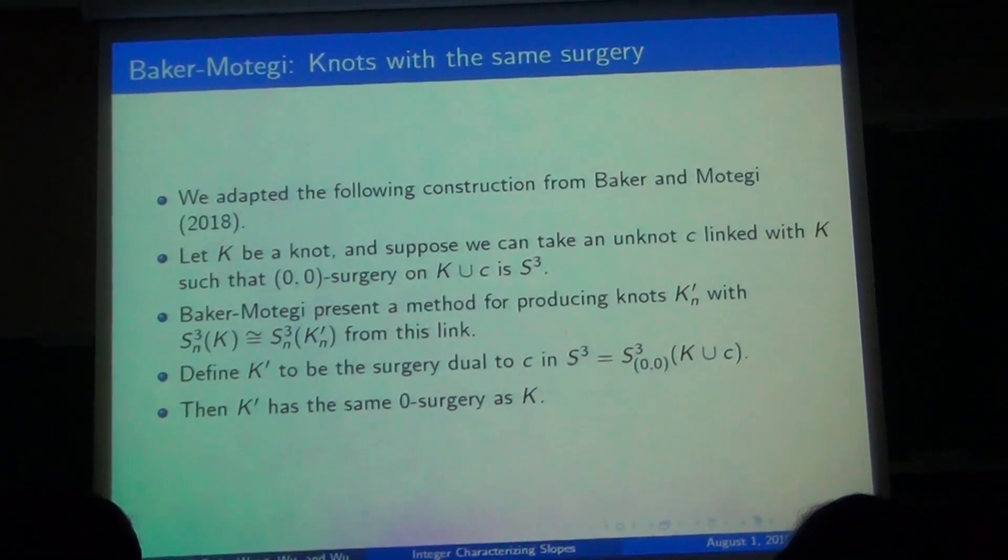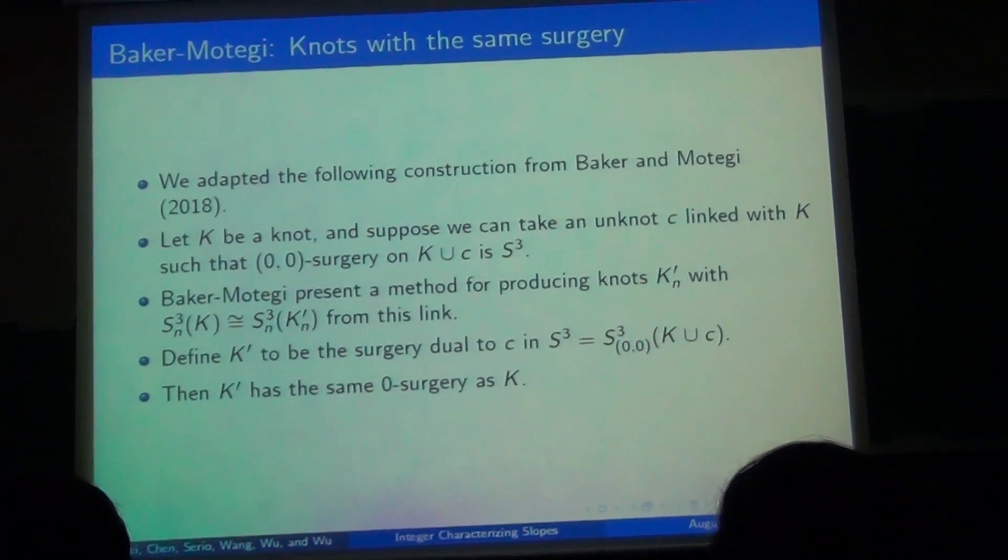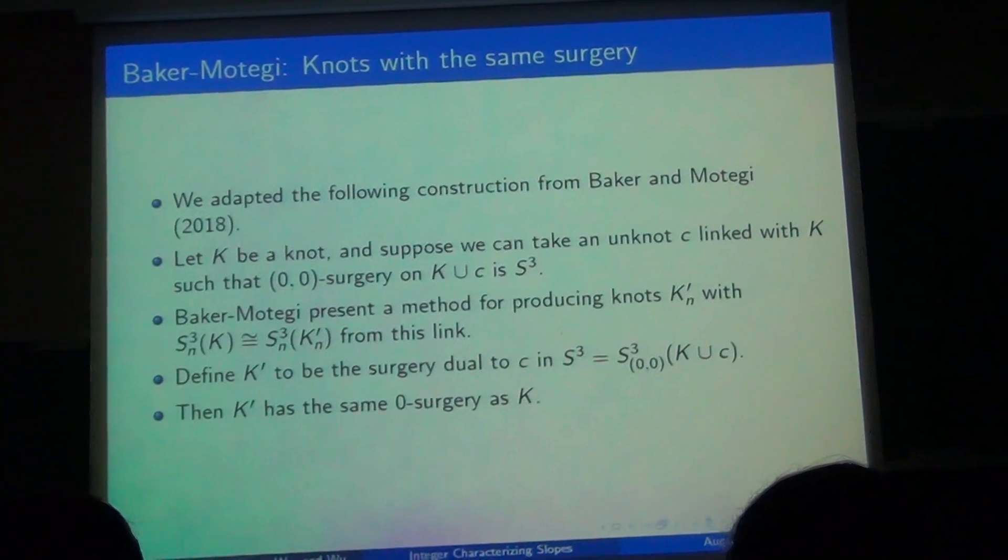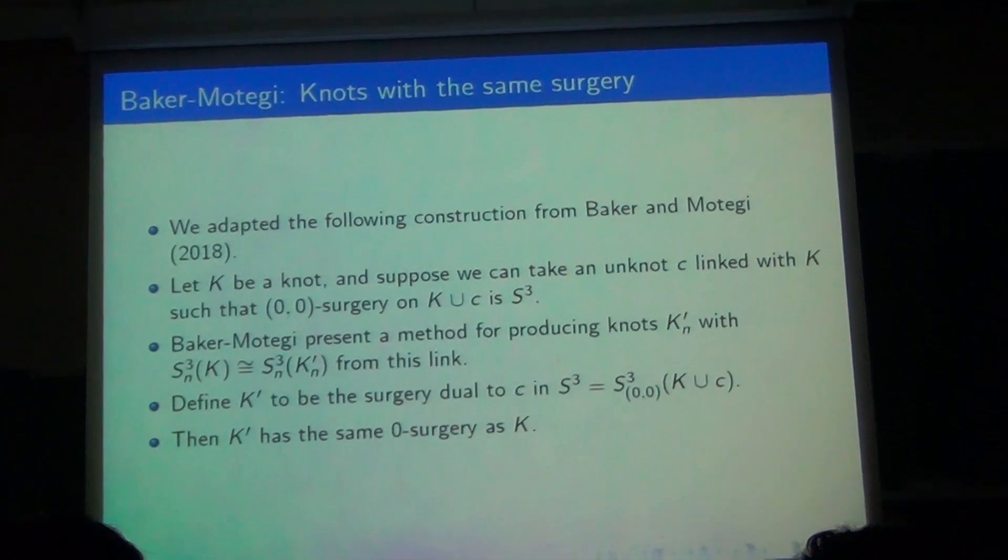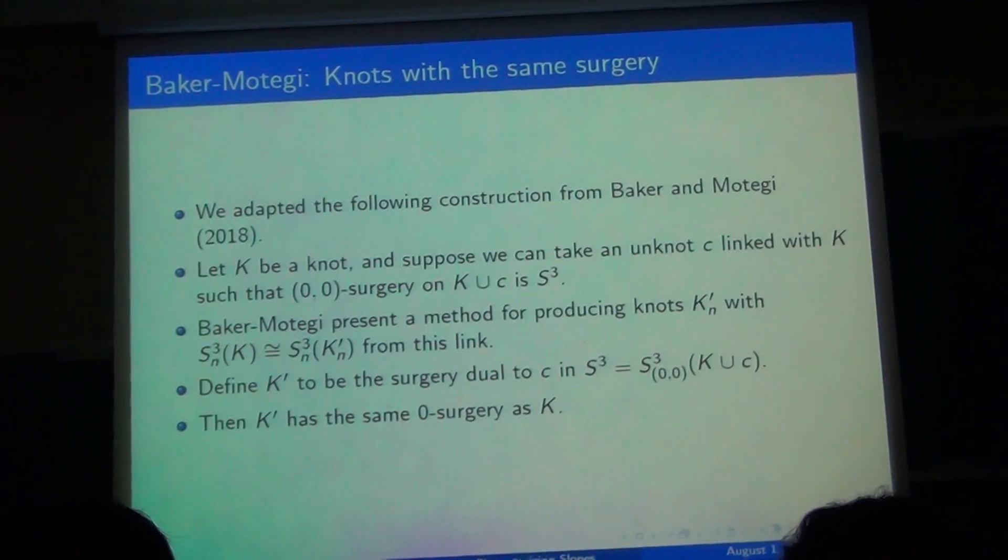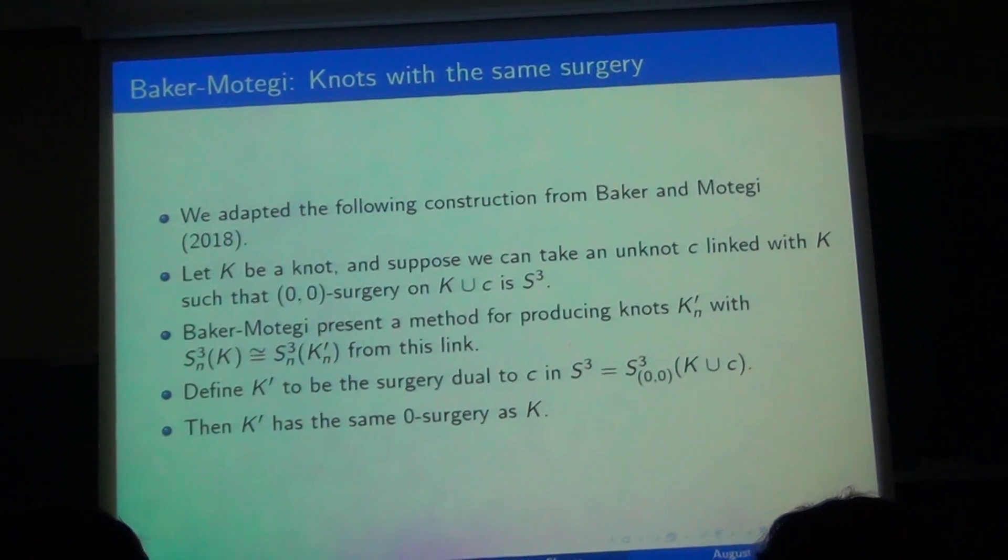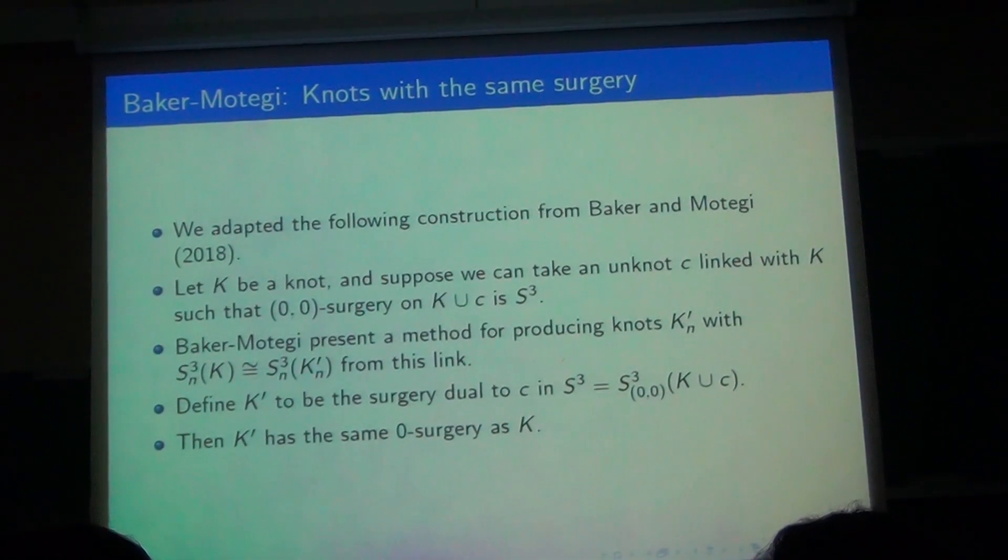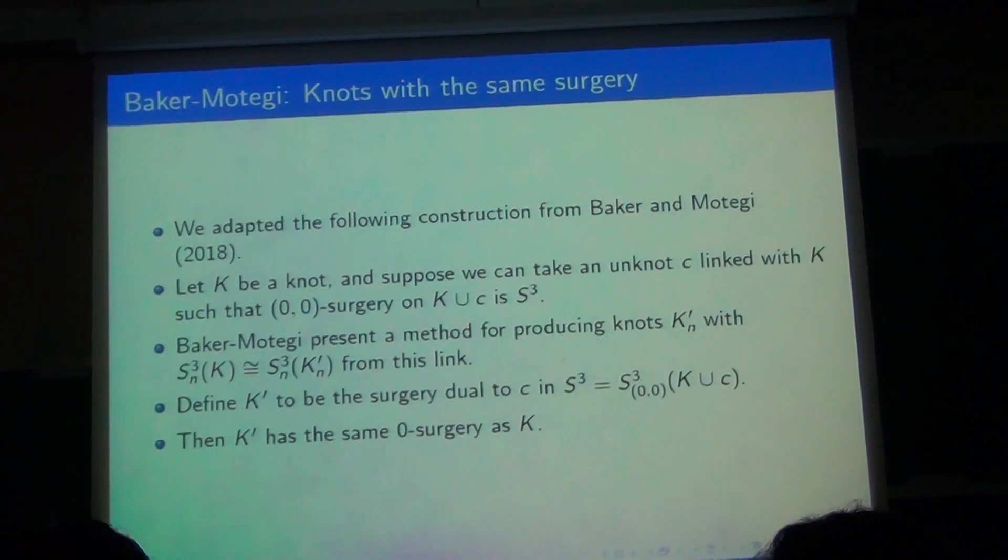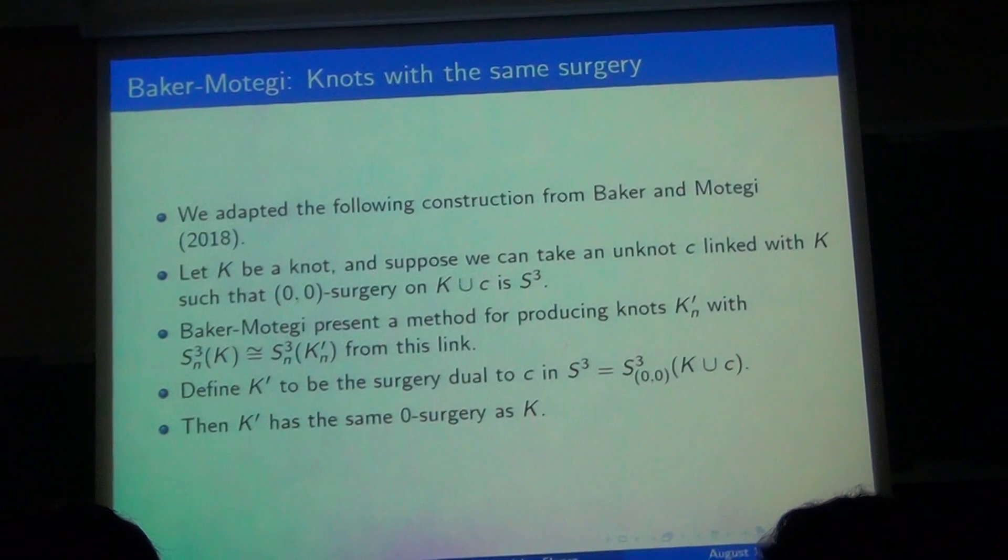So there's another construction for getting knots with the same surgery due to Baker and Motegi. And it's actually more or less equivalent to Piccirillo, but it's a little more abstract and better suited for theoretical purposes. So the following is our adaptation of the construction. The setup is we have a knot K, and we suppose we can take a knot C linked with K, such that zero-zero surgery on the link K and C is S³. Then we have a way of getting knots K_n prime for each integer n that have the same n surgery as K.